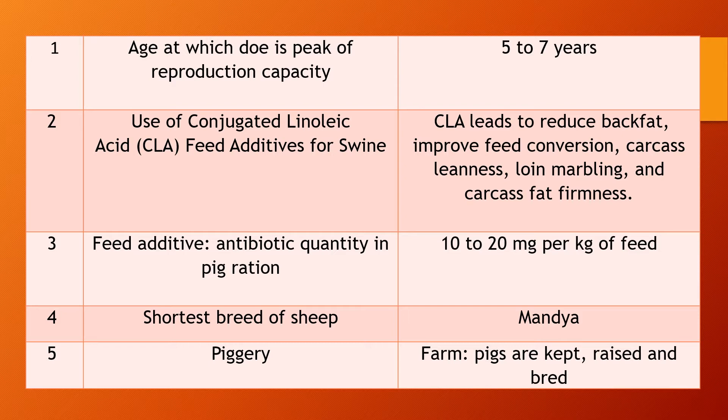Question 3. Antibiotic is added as a feed additive in piggery. At what rate? Answer: generally 10 to 20 mg per kg of feed, depending upon the type of antibiotic.